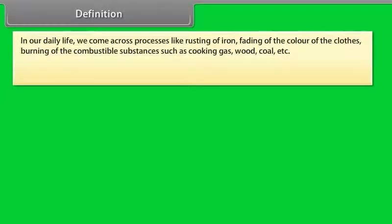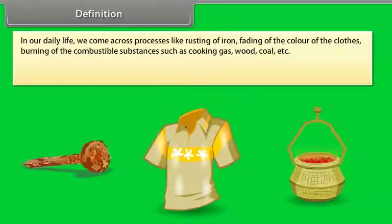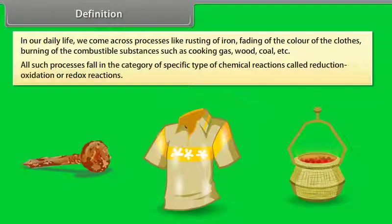In our daily life, we come across processes like rusting of iron, fading of the color of clothes, and burning of combustible substances such as cooking gas, wood, coal, etc. All such processes fall in the category of a specific type of chemical reactions called reduction-oxidation, or redox reactions.